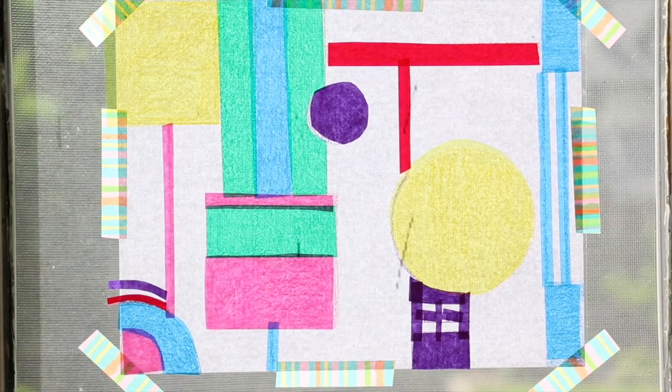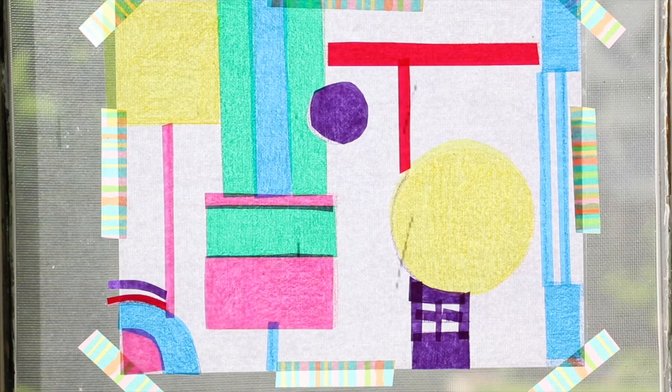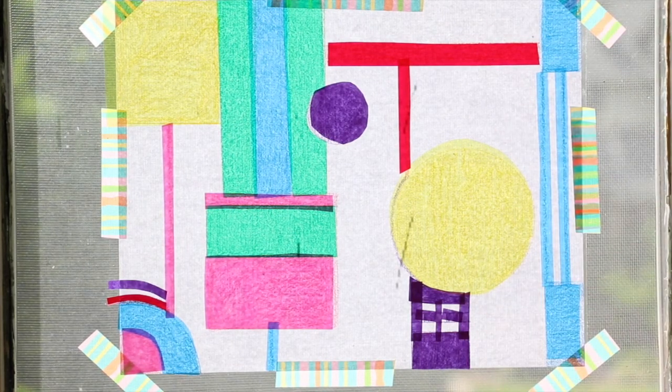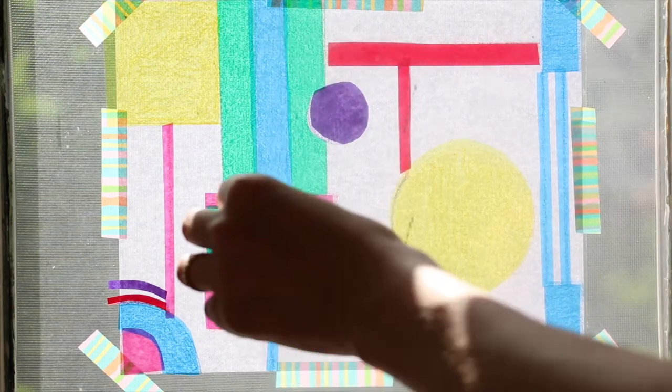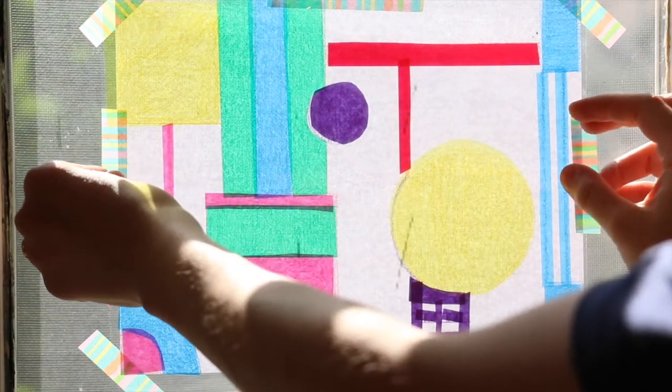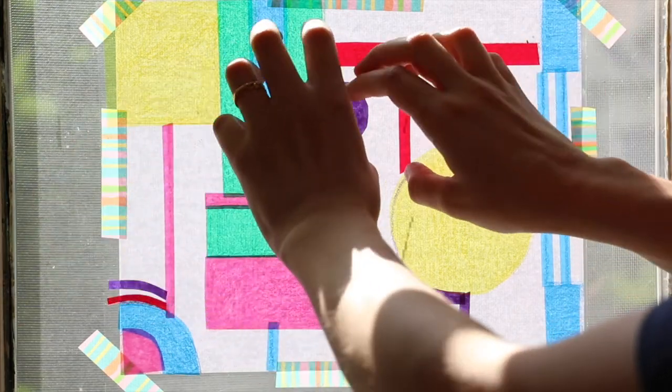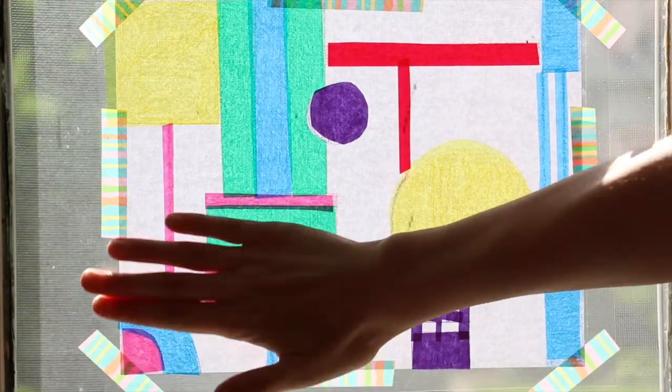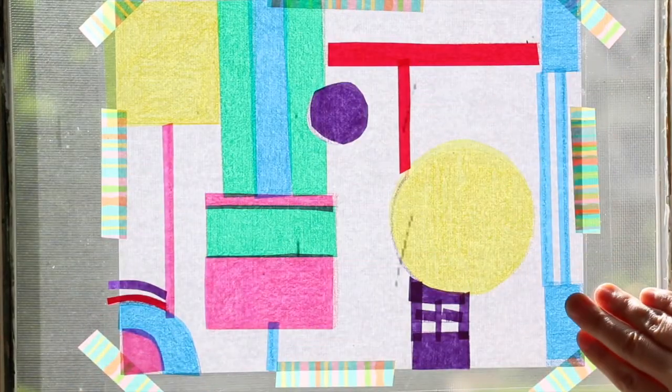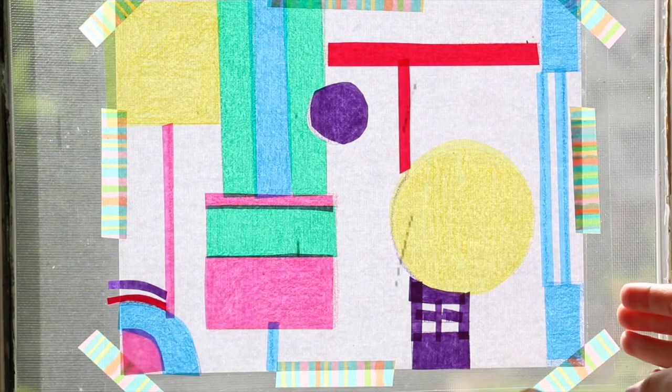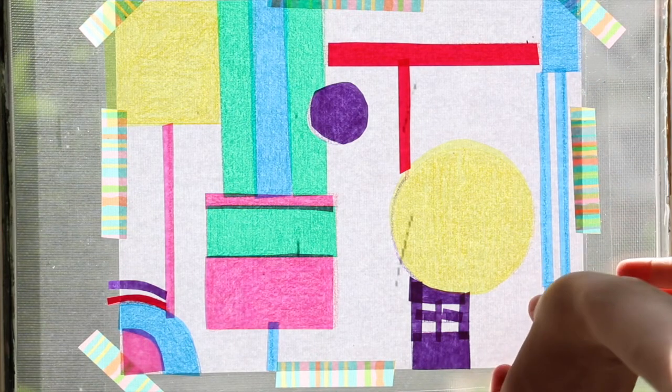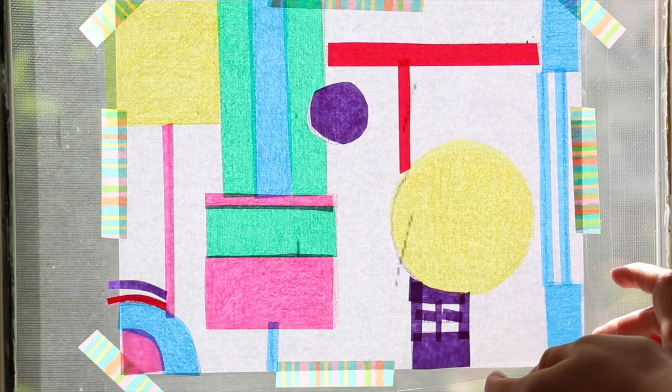The final step is to close the stained glass window project with a sheet of the transparent Clearlay, not a colored piece. You could use a colored piece, but I like to just use a clear piece. That covers the rest of any remaining adhesive, and then you can take it off the window and trim the edges if you need to.